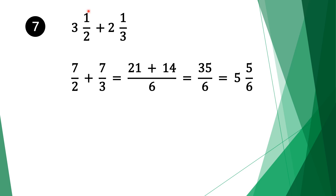Let's move on to equation 7. We have 3 and 1 half plus 2 and 1 third. Again we convert our mixed fractions into normal fractions. Multiply the denominator: 2 times 3 is 6, add 1 is 7. Bring the denominator 2 and the plus sign. Do the same for the second fraction: 3 times 2 is 6, add 1 is 7. Bring the denominator 3. Now we have normal adding fractions and we don't have the same denominators.